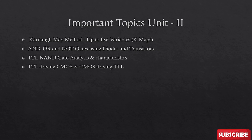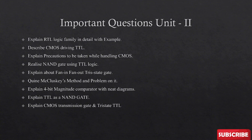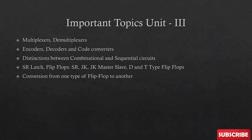Important topics in Unit 2: Karnaugh map up to 5 variables. K-map up to 5 variables is a little lengthy — drawing the table for 5 variables is a headache, but if they give up to 5 variables, that question will appear for 10 marks directly. Also: AND/OR/NOT gates using diodes and transistors, RTL logic, CMOS driving TTL, realizing NAND gates using TTL logic, fan-in fan-out, the Quine-McCluskey method and a problem on it, and explaining the TTL method.